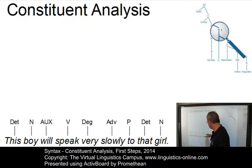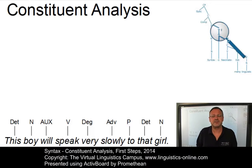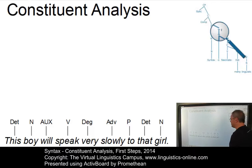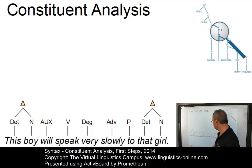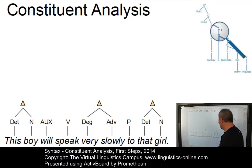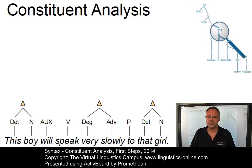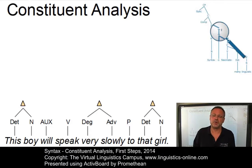Here is our categorical analysis with the terminal nodes. Let's now add the first set of constituents, where, for example, our determiners build constituents with their nouns. And where the degree adverb 'very' builds a constituent with 'slowly.' So here we have the first three constituents, and at this point we can already introduce some terminology.